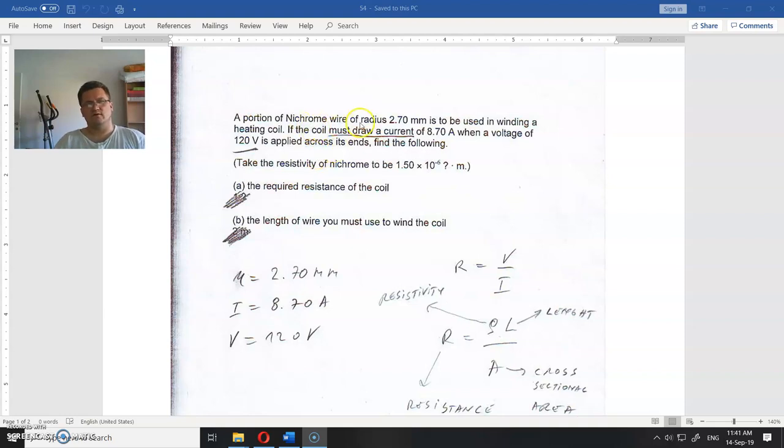A portion of Nichrome wire with radius 2.7 mm is to be used in winding a heating coil. The coil must draw a current of 8.7 A when a voltage of 120V is applied across the coil. The resistivity is given. We need to find the resistance and length of the wire.